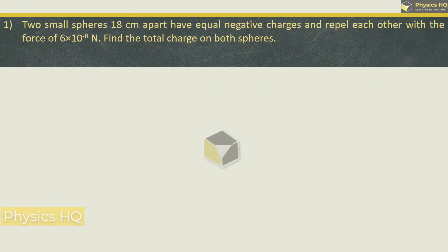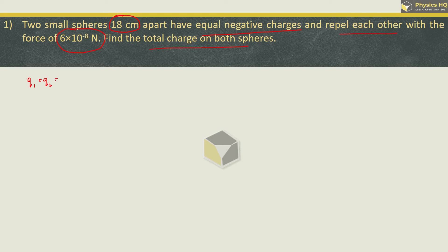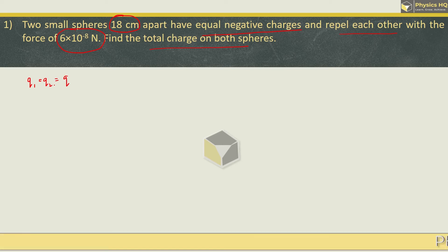Two small spheres, 18 cm apart, have equal negative charges and repel each other with the force of 6×10⁻⁸ N. Find the total charge on both the spheres. So let us say charge Q1 and the other one is Q2. If both are the same, they will be equal to Q.